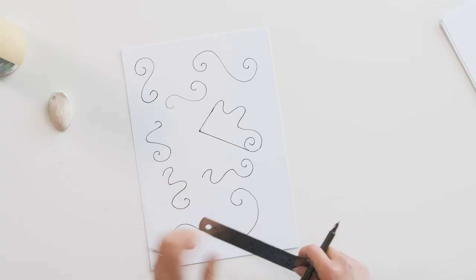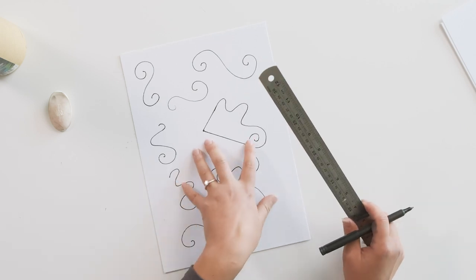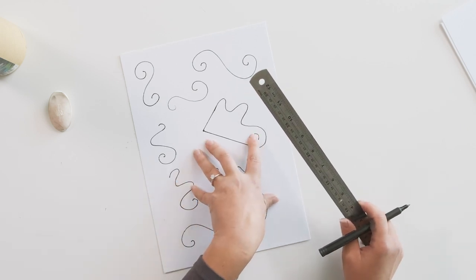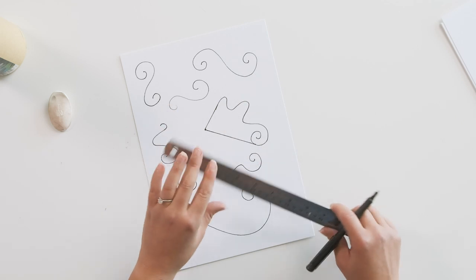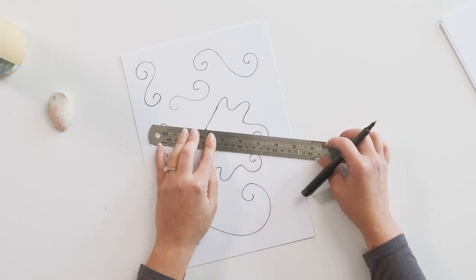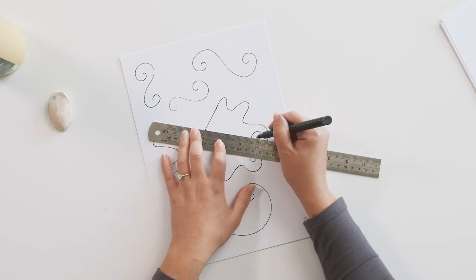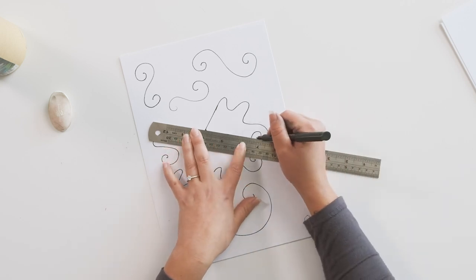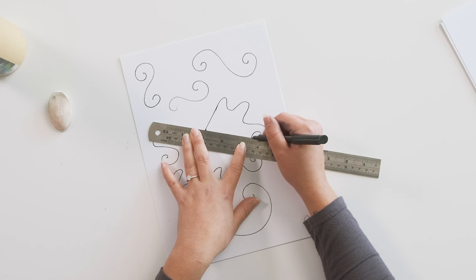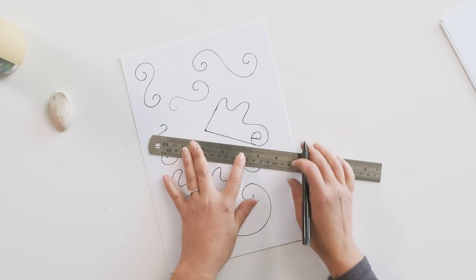But it doesn't look quite completed yet, and that's because we need to join every edge of our swirl back to this vanishing point. As I move my ruler back from the start to the edge, my starting point of my swirl is just going to go a little bit inwards.